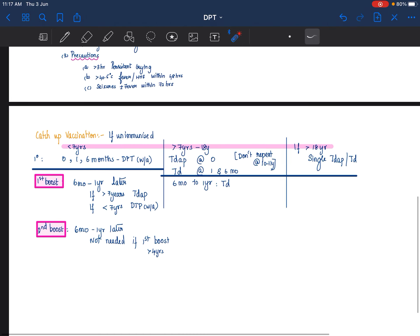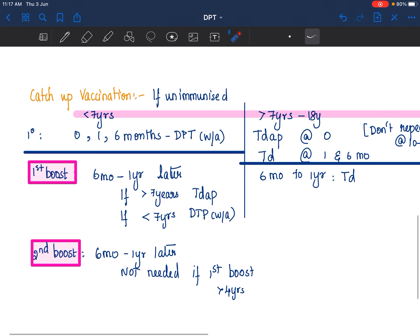Then, what do you do for catch-up vaccination for a child who is not immunized? See, if the child is less than 7 years of age, primary vaccination at 0, 1 and 6 months with DPT.